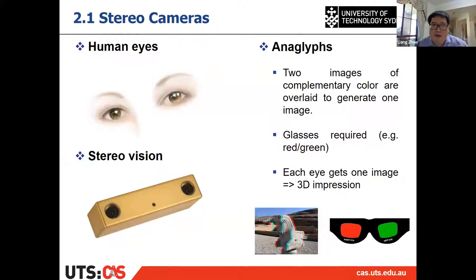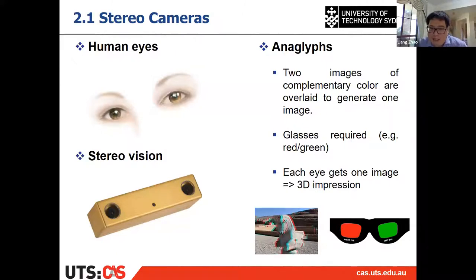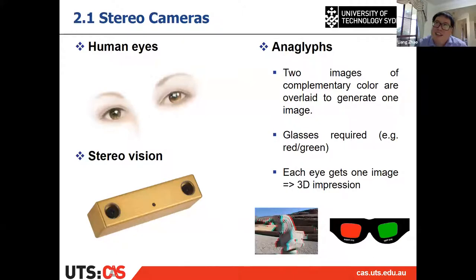The stereo vision or stereo camera is very similar to the human eyes, or animals that have two eyes, to get the distance. If you look at the bottom right picture, this is some kind of very first 3D image we have, from the late 1990s.